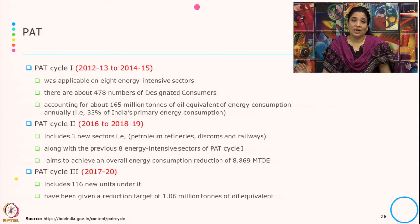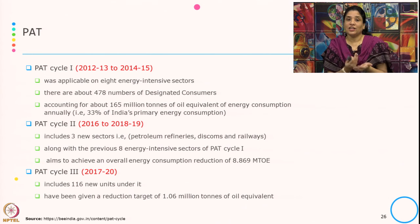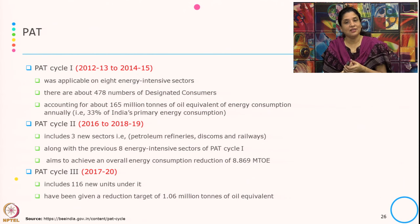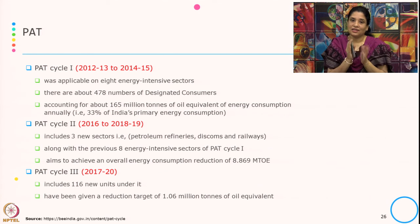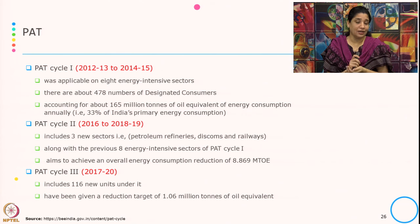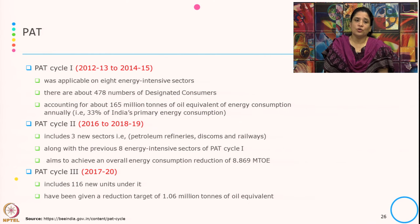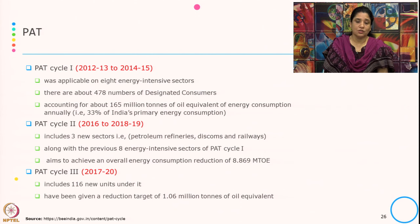Interestingly, in Cycle 1 they overachieved their targets. One criticism of this overachievement is that possibly the targets given for energy saving were set much below the actual capability of the industry. PAT Cycle 2, from 2016 to 2018–19, includes 3 additional sectors — petroleum refinery, DISCOMs, and railways — along with the previous 8 energy-intensive sectors, aiming to achieve an overall energy consumption reduction of 8.869 million metric ton equivalent. PAT Cycle 3, from 2017 to 2020, also includes 116 new units with a reduction target of 1.06 million tons of oil equivalent.